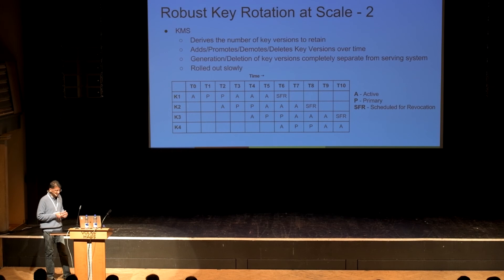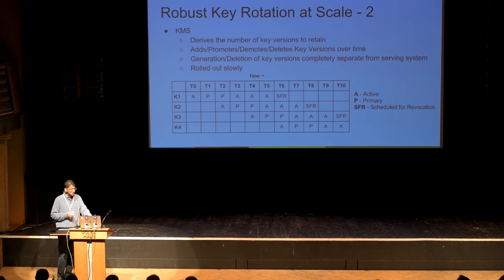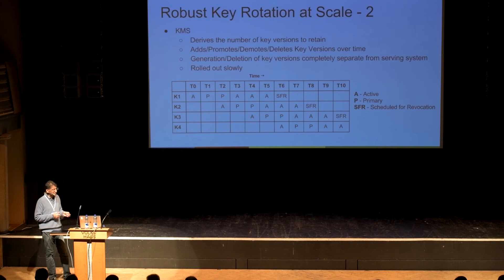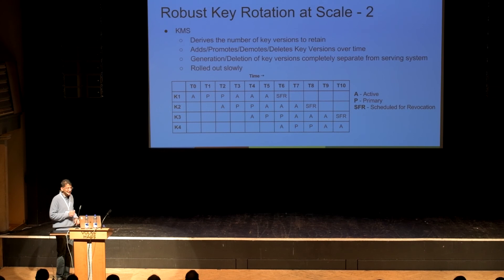K2 gets introduced at T2, then progresses through the states. For K1, based on the rotation frequency and the TTL, we derive the number of key versions to retain. The schedule for revocation is held for one more generation so that if clients use it, they can still access the data — we would alert them so data wouldn't be lost. For many Google systems such as Bigtable, the ciphertext TTL is enforced because data gets rewritten every time a compaction occurs.